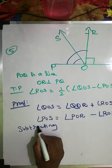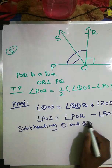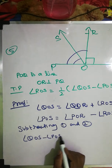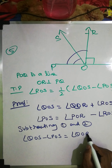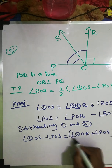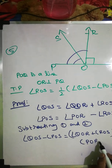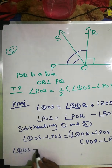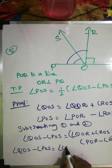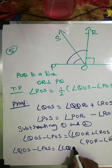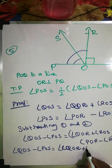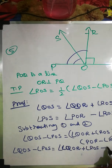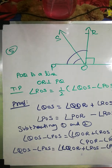Subtracting equation 2 from equation 1: angle QOS minus angle POS equals (angle QOR plus angle ROS) minus (angle POR minus angle ROS). Since OR is perpendicular to PQ, angle QOR equals angle POR equals 90 degrees, so QOR minus POR equals zero. This simplifies to angle QOS minus angle POS equals 2 times angle ROS.